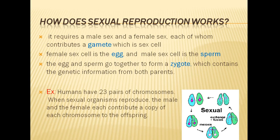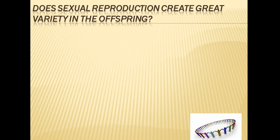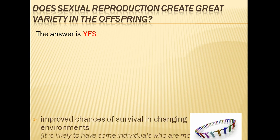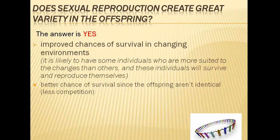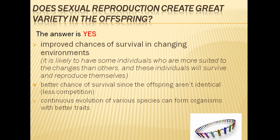This is an example of sexual reproduction. Does sexual reproduction create great variety in the offspring? Yes. It improves chances of survival in changing environments. Better chances of survival since the offspring aren't identical. Continuous evolution of various species can form organisms with better traits, and it promotes diversity of characters in the offspring.